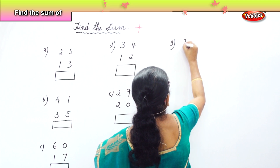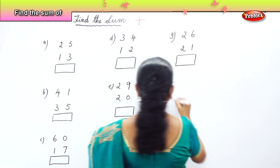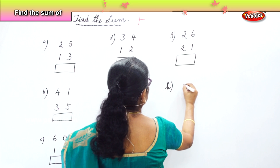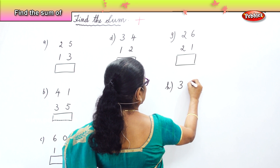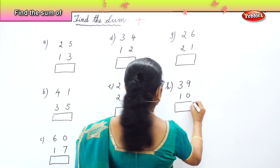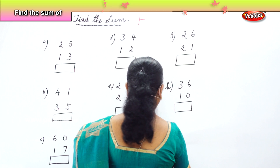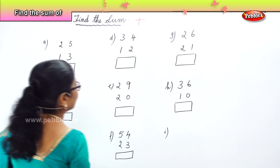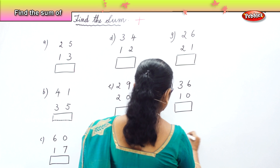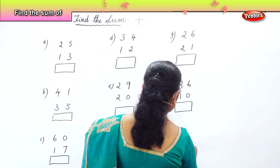Next: twenty-six plus twenty-one, thirty-nine plus ten, twenty-two plus sixty.